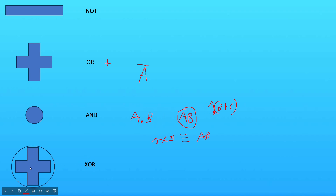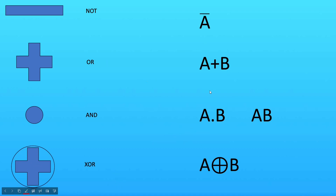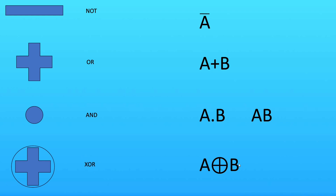For exclusive OR we have the OR symbol but with a circle around it. So examples: NOT A is A-bar; OR is A plus B; AND is A dot B or just A B; and exclusive OR is A circle-plus B. Going back to our truth table, we're actually going to work through this and extract the boolean algebra from it.